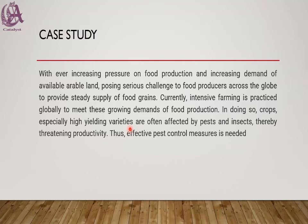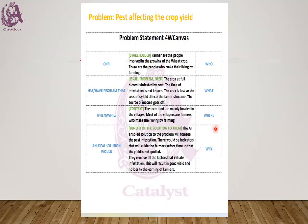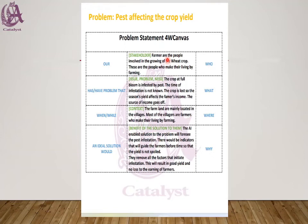Farming is very important these days, and farm produce is critical. Pests and insects are very relatable to the farmland. Let us build the 4W canvas for this scenario. The problem statement — pest affecting the crop yield — should be written on top. For the canvas, you retain the keywords on the left-hand side and on the right-hand side, maintaining the headings. In the blank areas in between, you write down the statements.